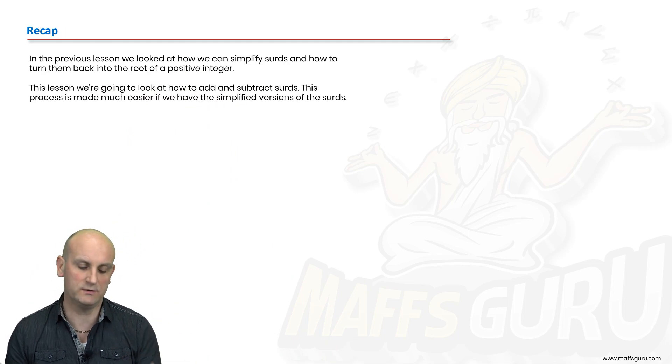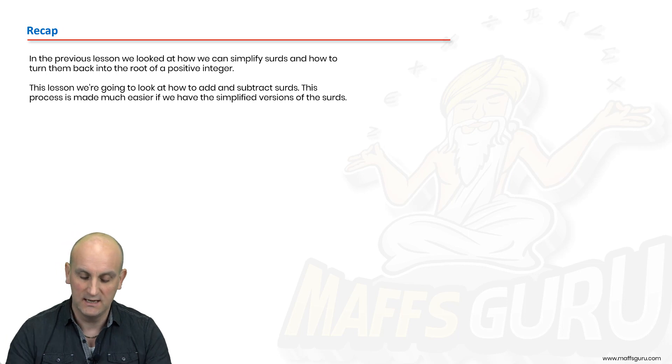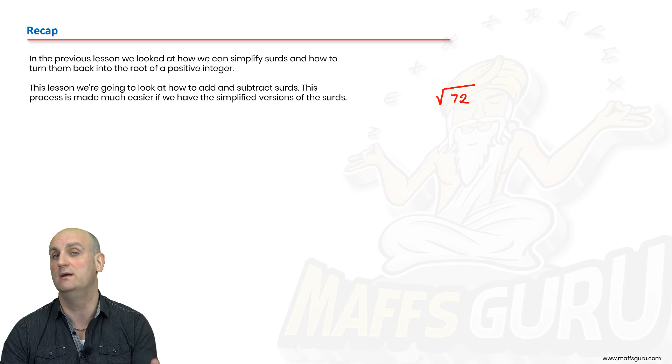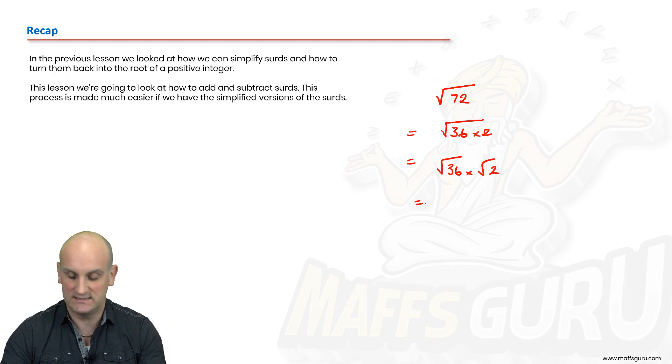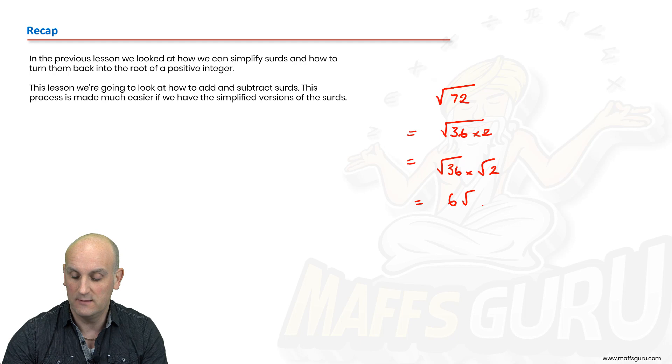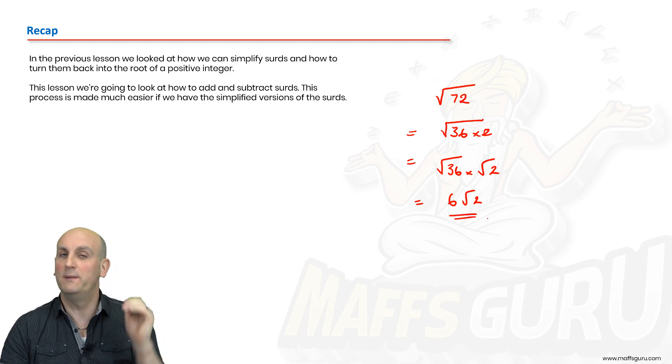In a previous video, we looked at the idea of how we can simplify surds. There we go, root of 72. Now, we could leave it that way, but we know that if we can find the product of a square number and another number to make 72, then life becomes a little bit easier for us. So that becomes 36 times 2, or the root of 36 times 2, which becomes the root of 36 times the root of 2. And we know the root of 36 is 6, which becomes 6 root 2.